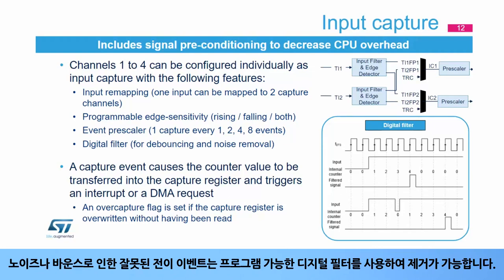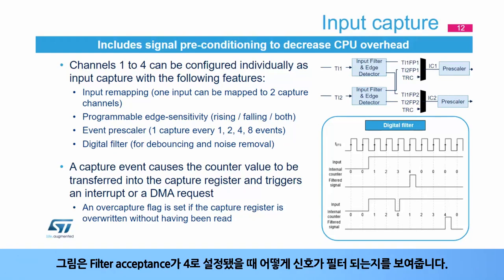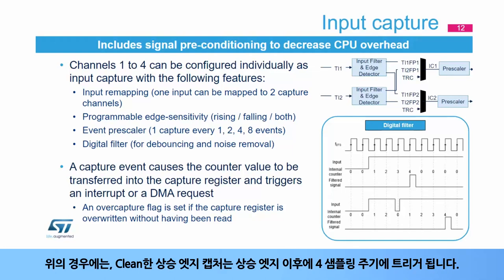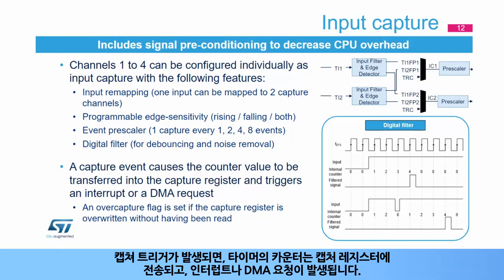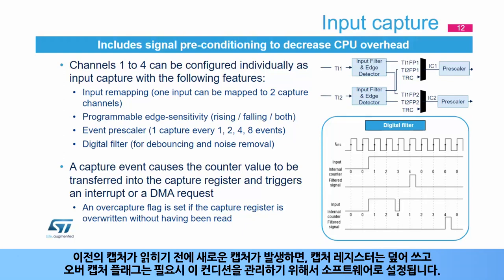Spurious transition events due to noise or bounces can be removed using a programmable digital filter. The figure shows how a signal is filtered when the filter acceptance is set to 4. In the upper case, a clean rising edge capture is triggered four sampling periods after the rising edge. In the lower case, a glitch causes the filter counter to be reset and the capture only happens after four successive samples at high level have been counted. Once the capture trigger is issued, the timer's counter is transferred into the capture register and an interrupt or DMA request can be issued. If a new capture occurs before the previous one has been read, the capture register is overwritten and an over-capture flag is set.